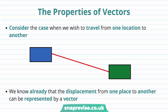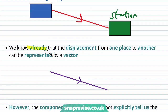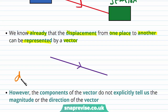So what are the main properties of vectors? Consider the case when we wish to travel from one location to another. Let's say we're currently at the shop and we'd like to travel to the train station. So we have an arrow pointing from the shop to the train station. We know already that the displacement from one place to another can be represented by a vector. If we're looking at the displacement from one location to another, then we can write the displacement as, say, p, where p is a vector.